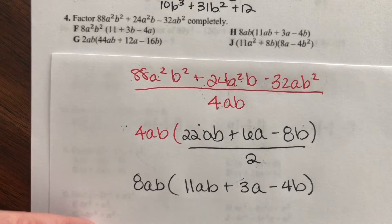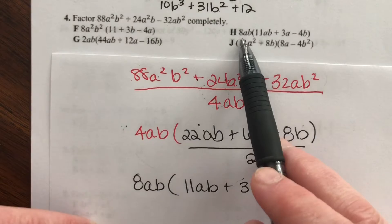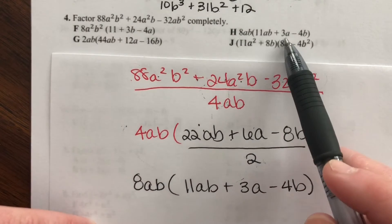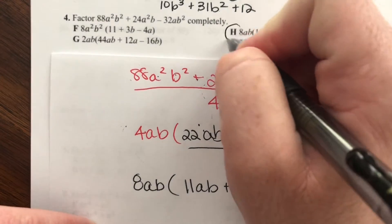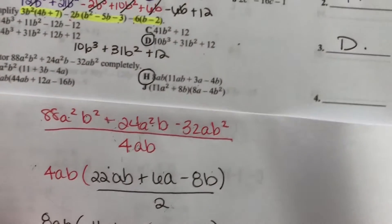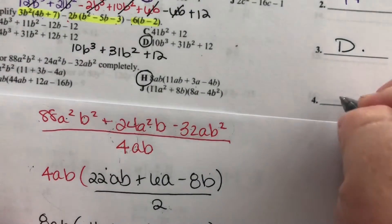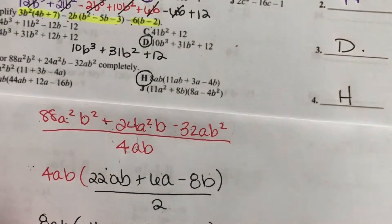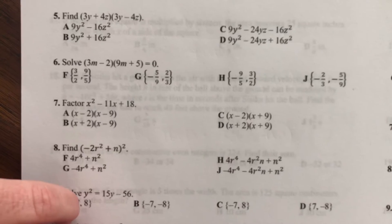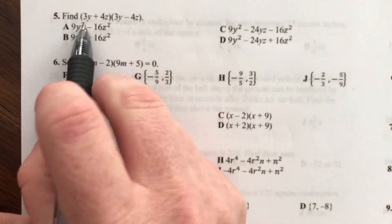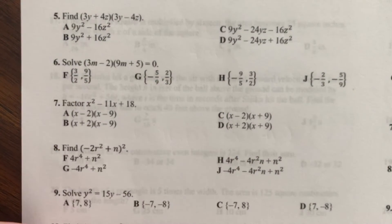So let's find an answer that matches that: 8ab times 11ab plus 3a minus 4b — that's H. H for number 4. Number 5: find this guy times this guy. So we're multiplying binomials. I'm going to start off with this 3y and distribute it to both of the other terms.